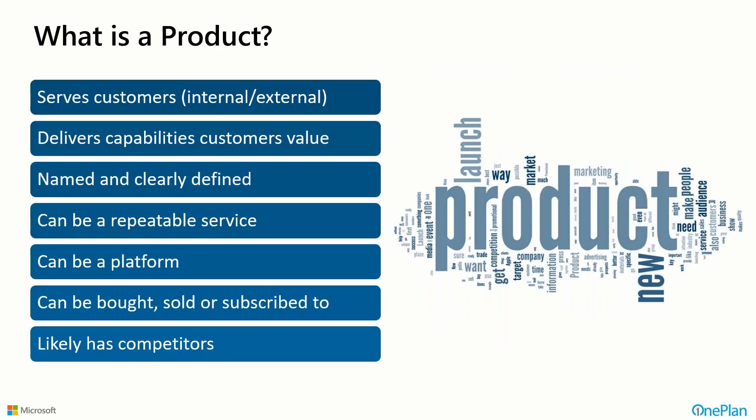What is a product? It may not just be a tangible good we sell. It's anything that serves a customer — internal or external — delivers capabilities that customers value, something you can clearly name and define. It can be a repeatable service, a platform technology someone subscribes to, or anything that can be bought, sold, or subscribed to. It likely has competitors, because if we're the only ones selling it, we should ask ourselves why no one else is in this marketplace.